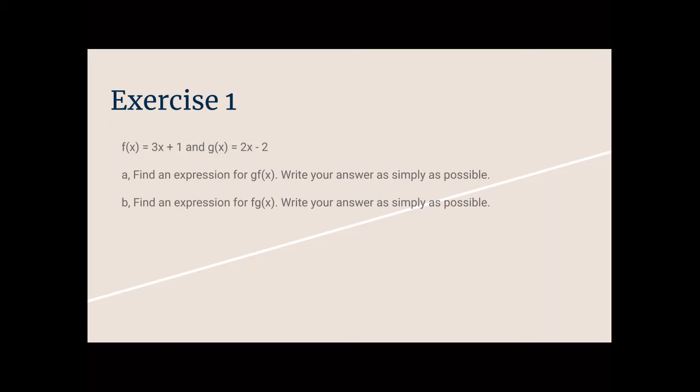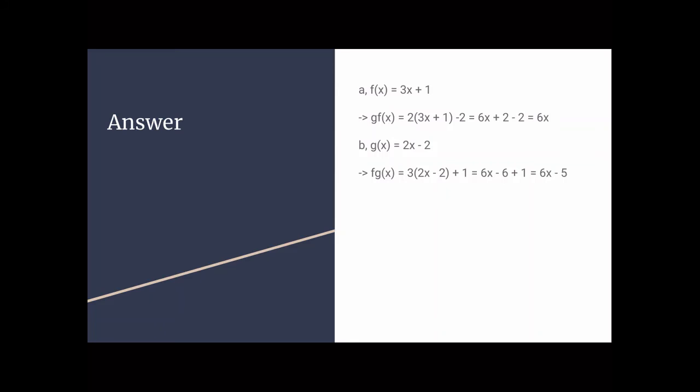Exercise 1: f(x) equals 3x plus 1 and g(x) equals 2x minus 2. A) Find an expression for g(f(x)) and write your answer as simply as possible. You can pause here to solve it by yourself. Answer A: f(x) equals 3x plus 1, so g(f(x)) equals 2 times (3x plus 1) minus 2, which simplifies to 6x. B) g(x) equals 2x minus 2, so f(g(x)) equals 3 times (2x minus 2) plus 1, which simplifies to 6x minus 5.